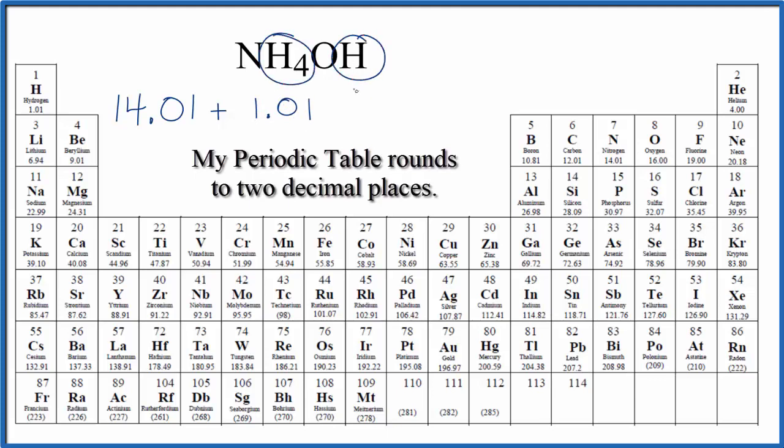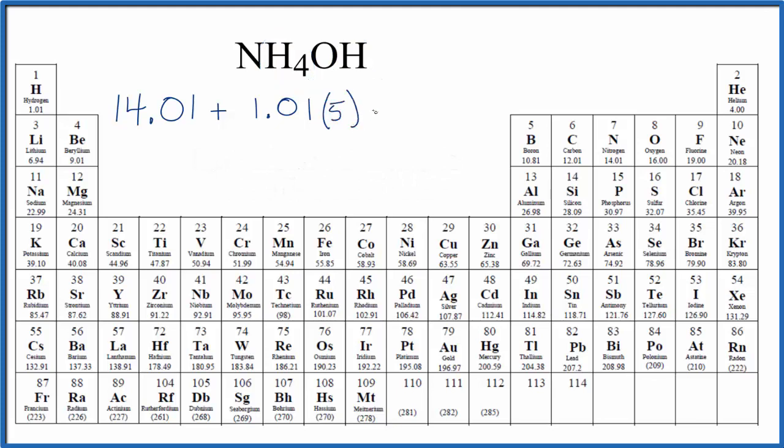and then we have this one out here, so we have a total of 5 hydrogen atoms. So we multiply this by 5, and then we're going to add oxygen, which is 16.00 grams per mole.